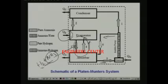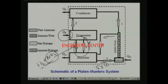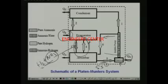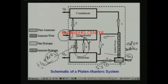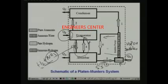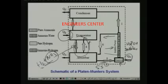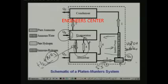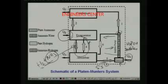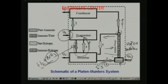The solution, now stronger in ammonia, is at 15 bar and goes to the generator where heat is supplied. Vapor bubbles are generated and move upward due to buoyancy, carrying some liquid along with them - that is the function of the bubble pump. The vapor bubbles move liquid from the bottom to the top due to buoyancy. At the top of the bubble pump, liquid goes down due to gravity and vapor moves up due to buoyancy - that is how the whole system works.